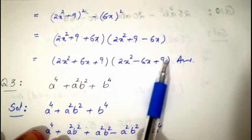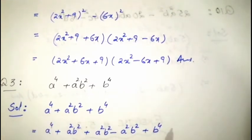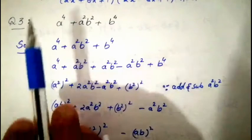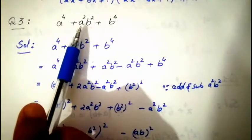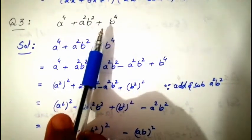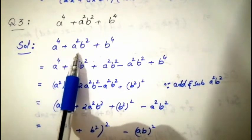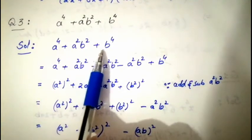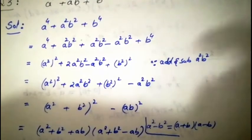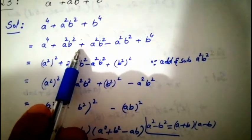Question number three is: a⁴ + a²b² + b⁴. Let's move to the solution: a⁴ + a²b² + b⁴. We can write a⁴ as (a²)² and b⁴ as (b²)². Now we have a² and b², and we need to form 2ab.